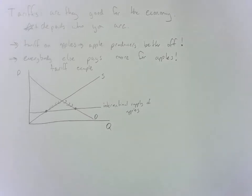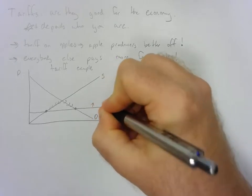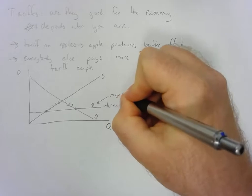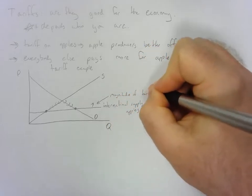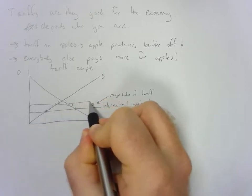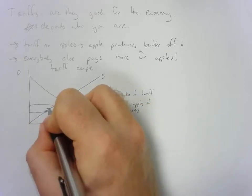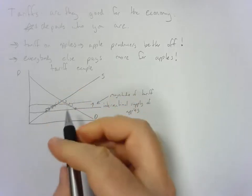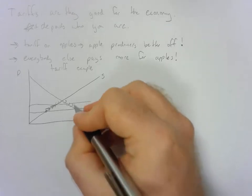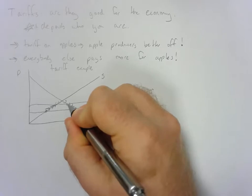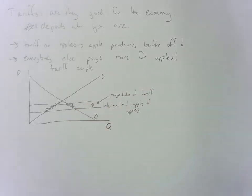So what happens when we put a tariff on these apples? Well, it effectively raises the price. We draw this line up a little bit more, and you can see that we get an increase in domestic production of apples. But we also get a decrease in domestic consumption of apples.